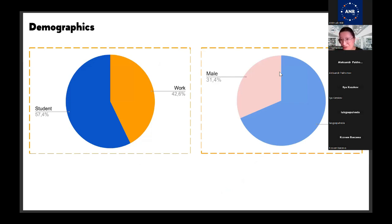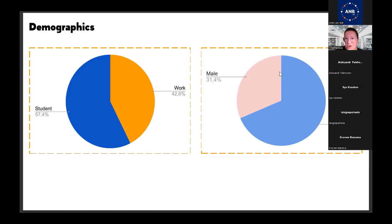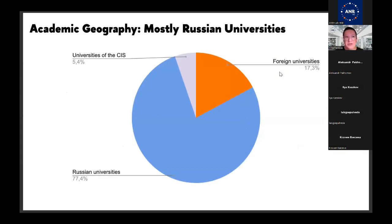I don't know the reason for the gender distribution — that is a question for exploration. In terms of occupation, more than half of participants are students, and about 40-plus percent are people who work. We had a very simple registration form, so it probably isn't enough for in-depth analysis — for example, we didn't have an option for people who both work and study. Still, this gives us a picture of the registrations. Now, a little bit about academic geography.